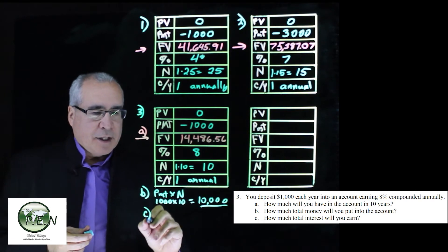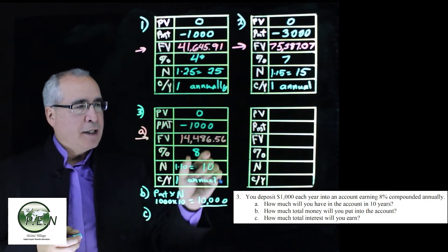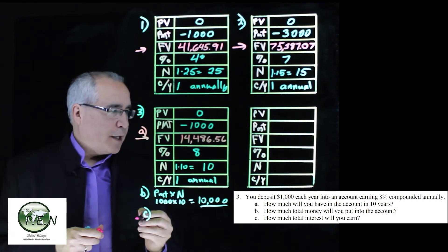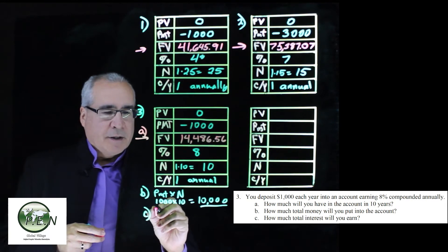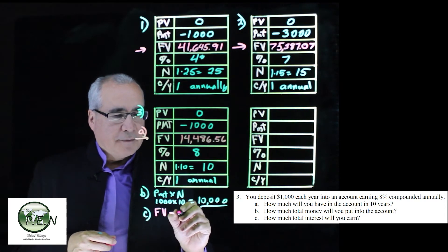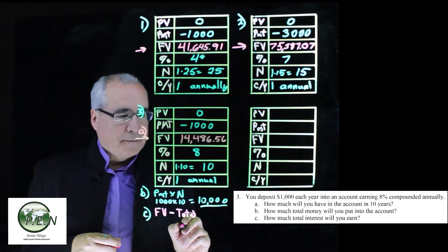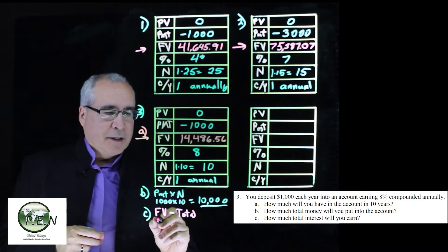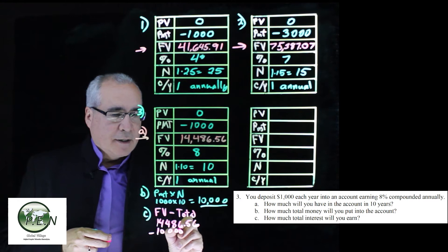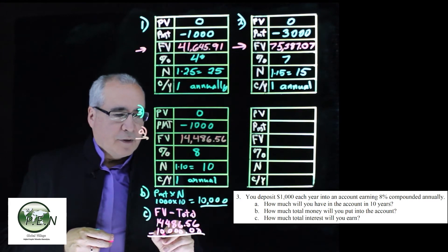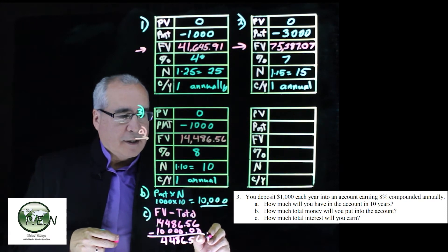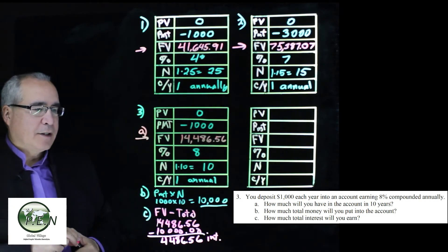To figure out how much interest we've earned, well, we put in $10,000. Anything over the $10,000 is interest, right? So we take the amount of our future value, and this calculation will always be future value minus the total of payments. So we're going to take our $14,486.56, subtract $10,000, and we'll see we have earned $4,486.56 in interest. So that's the answer to the C part.